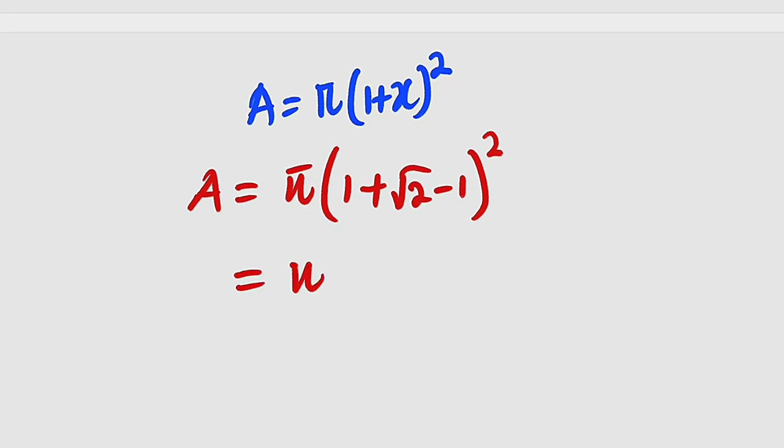This is equal to pi. Inside, this 1 will cancel this 1 because 1 minus 1 is 0. What do we have left? We only have root 2 inside, all squared. And you know root 2 squared will be 2. So in the end, we just have 2 pi as the area of the bigger circle.